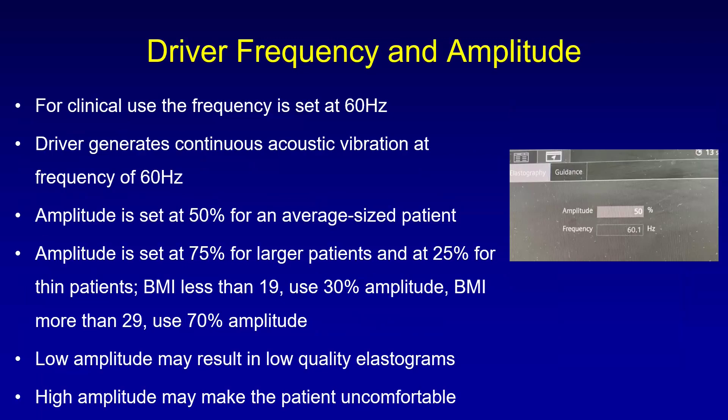The frequency for all clinical purposes is fixed at 60 Hz — it is pre-set by the engineer and remains at that value. We can only change the amplitude, which is usually set at 50% for an average-size patient, 75% for obese patients, and 25% for thin patients. We can use BMI to regulate the amplitude: below 19, use 30% amplitude; above 29, use 70% amplitude. Low amplitude may result in low-quality elastograms, and high amplitude may make the patient uncomfortable due to vibrations.